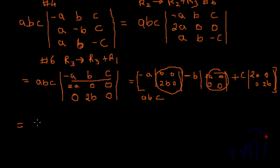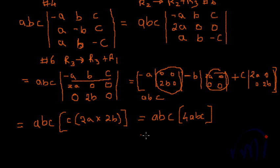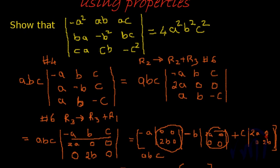So finally, it becomes a, b, c multiplied by, just this, right? Which is c into 2a into 2b, which is equal to a, b, c into 4a, b, c, which is equal to 4a square, b square, c square, which is our desired result.